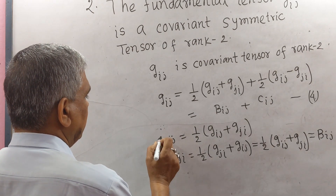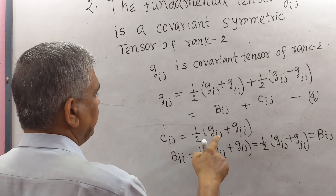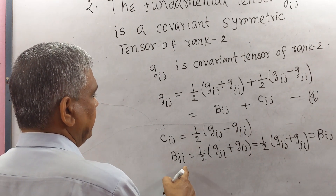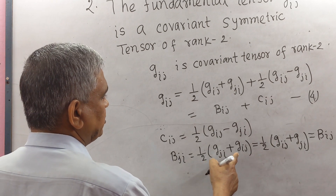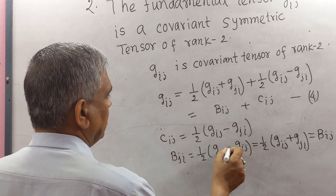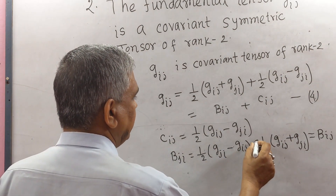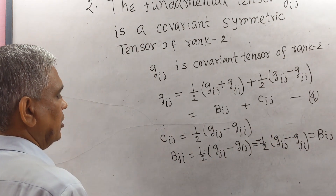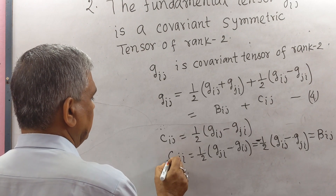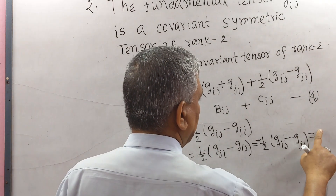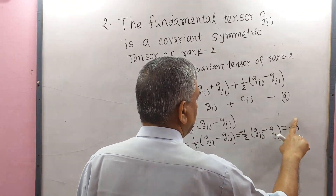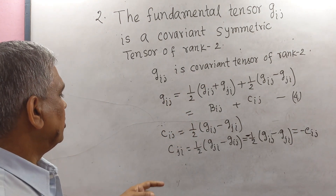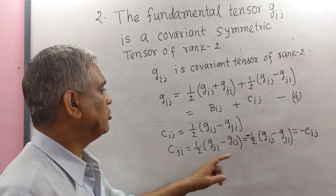Now we prove C_IJ is a skew-symmetric tensor. We have C_IJ = (1/2)(g_IJ − g_JI). Interchanging dummy suffixes I and J on both sides, we get C_JI = (1/2)(g_JI − g_IJ) = −(1/2)(g_IJ − g_JI) = −C_IJ. So C_JI = −C_IJ, which means C_IJ is a skew-symmetric tensor.